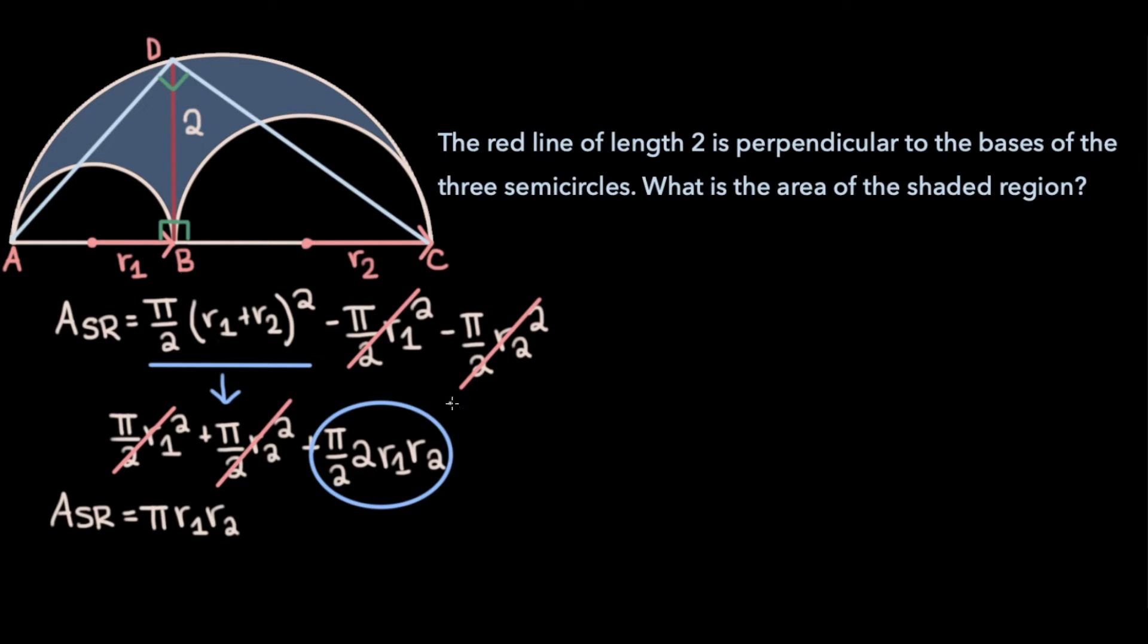Now because all three triangles are right triangles, we can apply the Pythagorean theorem on each one of them. And if we do so on triangle ABD to start, we get the equation AD² equals (2r1)² plus 2².